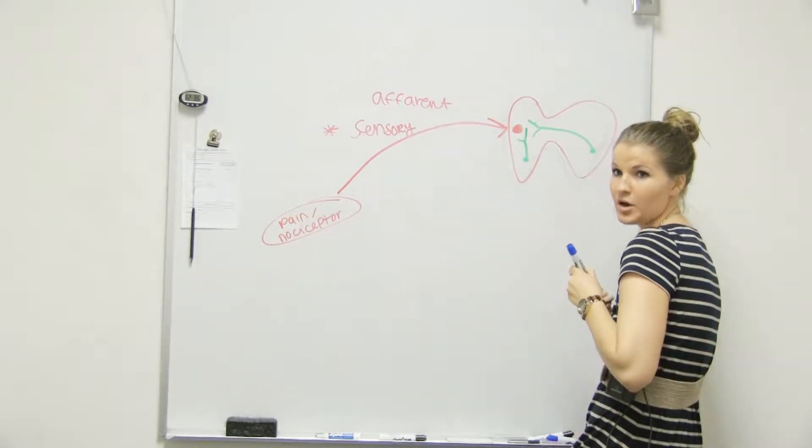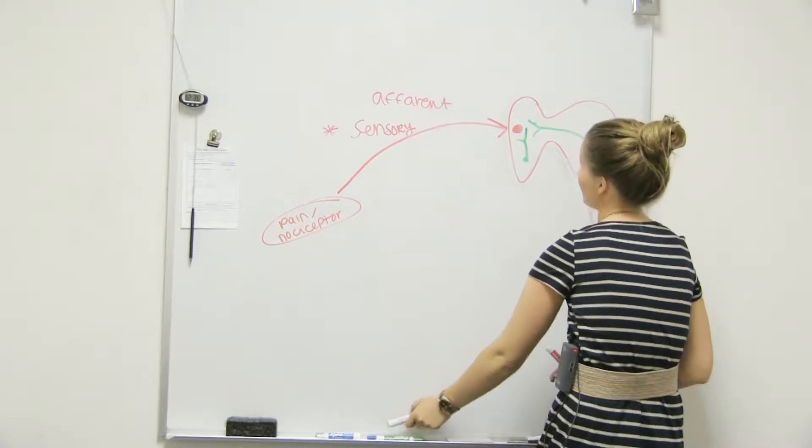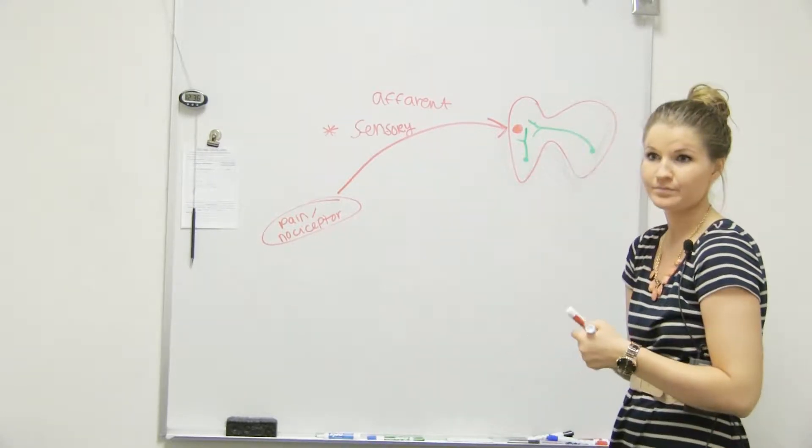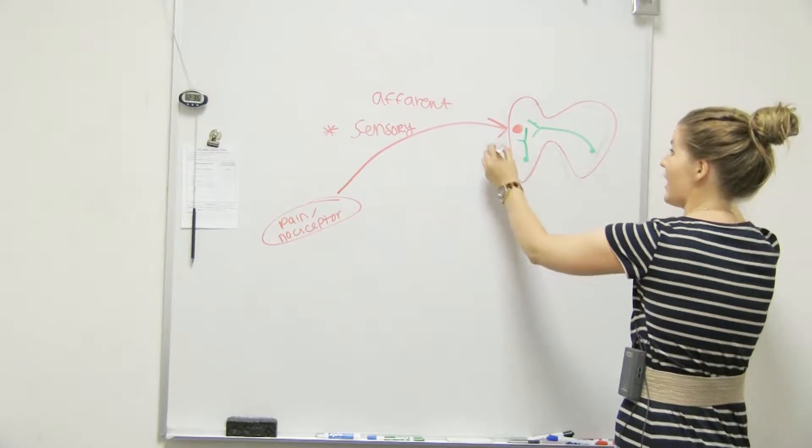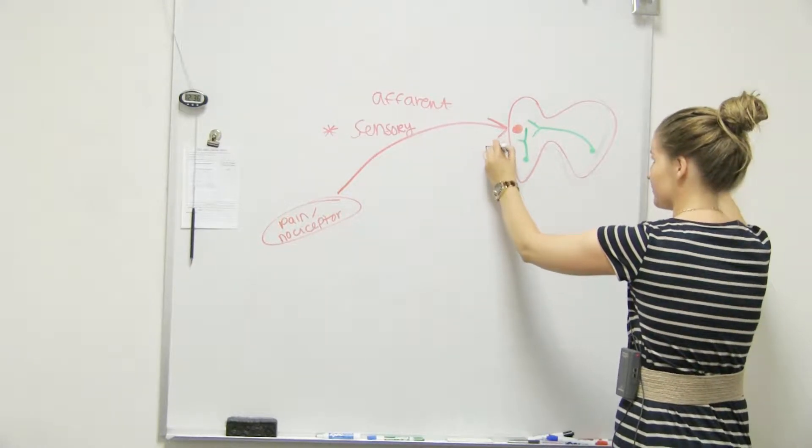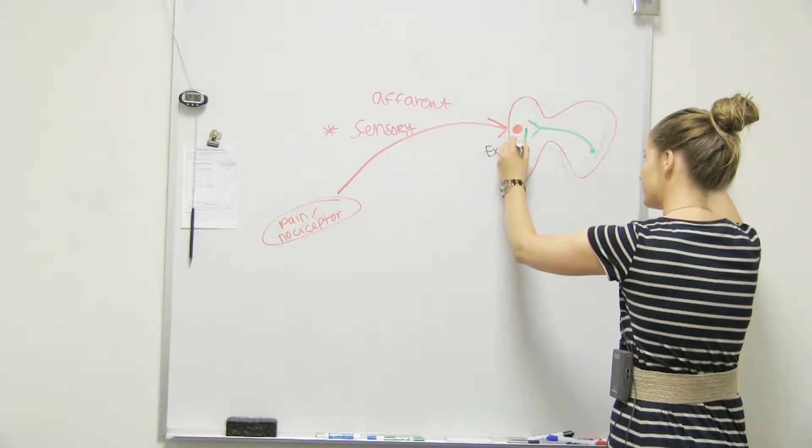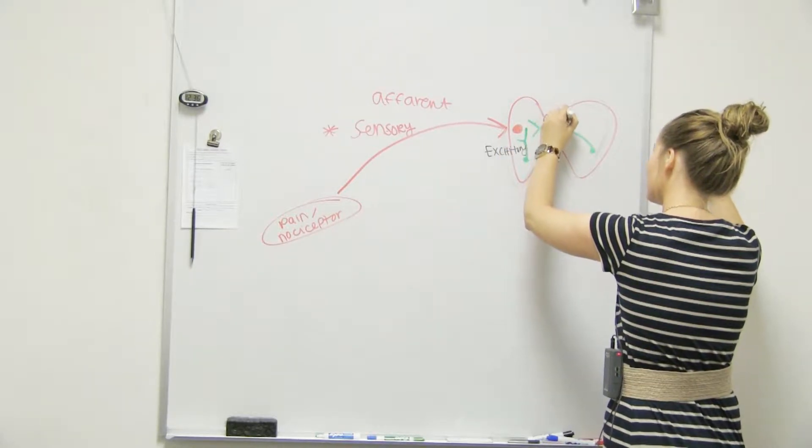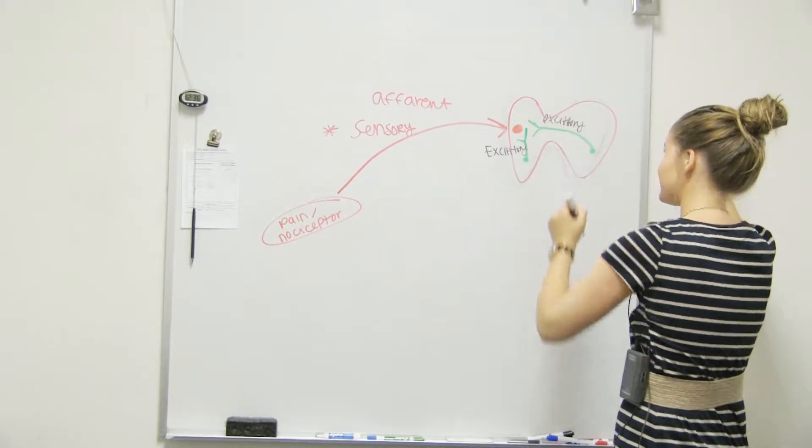Are these interneurons excitatory or inhibitory? Or are they both? I'm actually - they're both excitatory, are they? Mm-hmm. I know. So why would they both be excitatory?